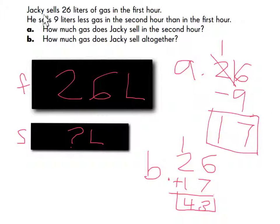Jackie sells 26 liters of gas in the first hour. He sells 9 liters less gas in the second hour than in the first hour. Part A: How much gas does Jackie sell in the second hour? Part B: How much gas does Jackie sell altogether? Part A: 26 take away 9 equals 17. Part B: 26 plus 17 equals 43.